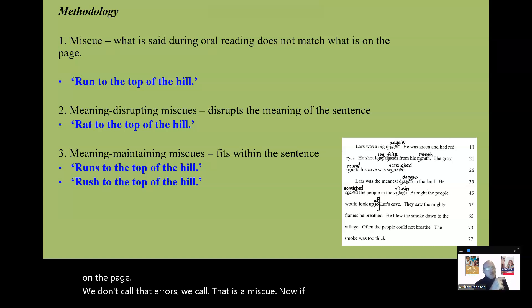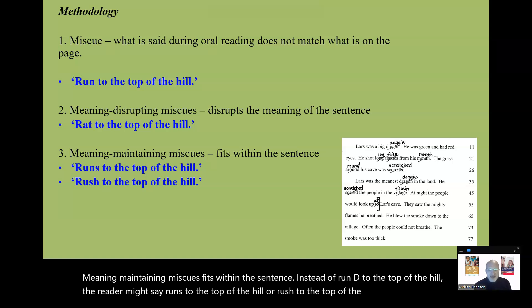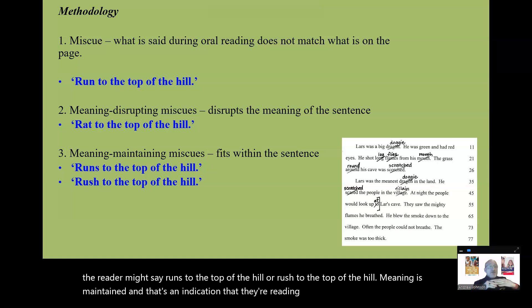Now, if the sentence is run to the top of the hill, there's different types of miscues. A meaning disrupting miscue would disrupt the meaning of the sentence. Rat to the top of the hill. That doesn't make any sense at all. That is disrupting meaning. Meaning maintaining miscues fits within the sentence. Instead of run to the top of the hill, the reader might say runs to the top of the hill, or rush to the top of the hill. Meaning is maintained. And that's an indication that they're reading beyond surface structure. They're reading for deep meaning. And that's a good thing.